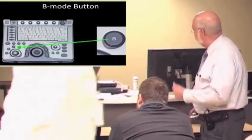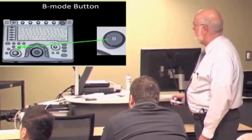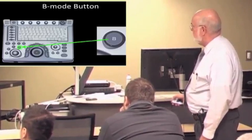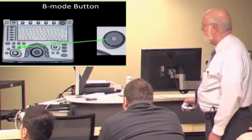So on the Logic E, in this same cluster where we found the Doppler controls, we've got the B mode button right here. All logically laid out on this side.